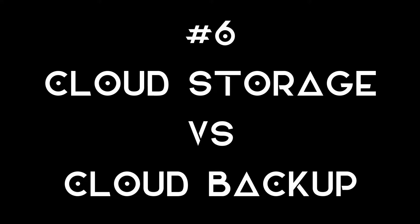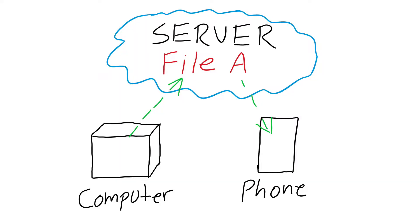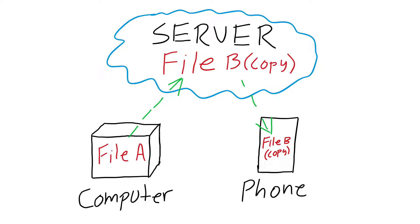Number six: cloud storage versus cloud backup. While people use these terms interchangeably, they are not the same thing. Let's think of it in terms of file A and file B. With cloud storage, you will only have a file A — file A's home is not on your device, but on a server that is based somewhere else, likely through internet service. But with cloud backup, file A's home is stored on your device, but there is a backup file — file B — stored on that server somewhere else.